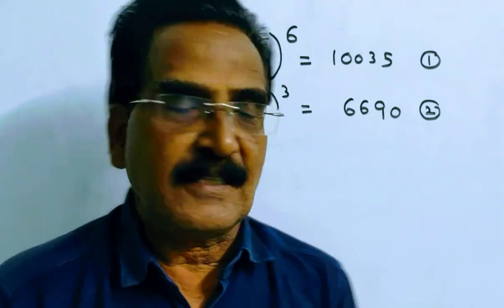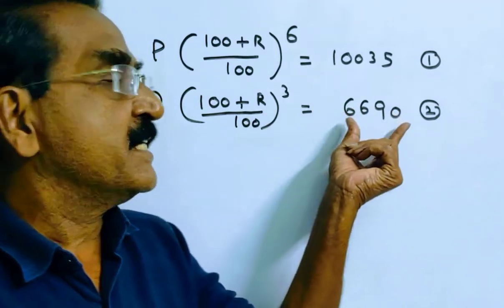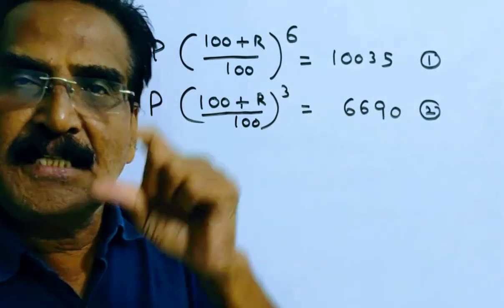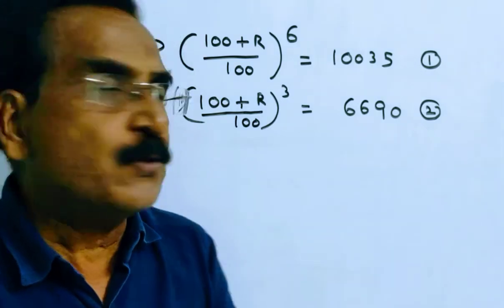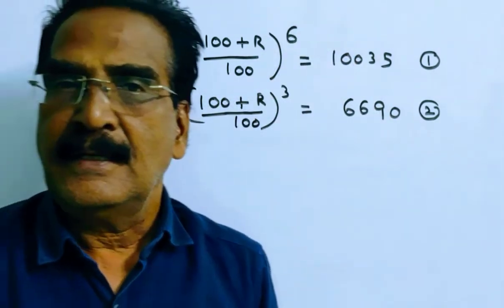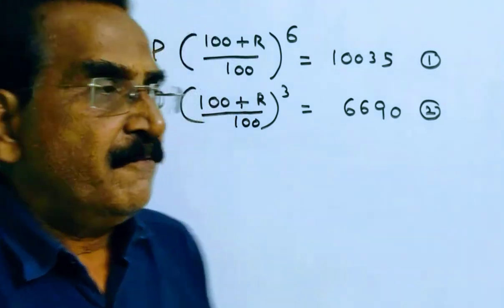Friends, the problem is given in the description box. See friends, there is a certain sum that amounts to 6690 in 3 years and the same sum amounts to 10,035 in 6 years. Here our question is, find the sum.